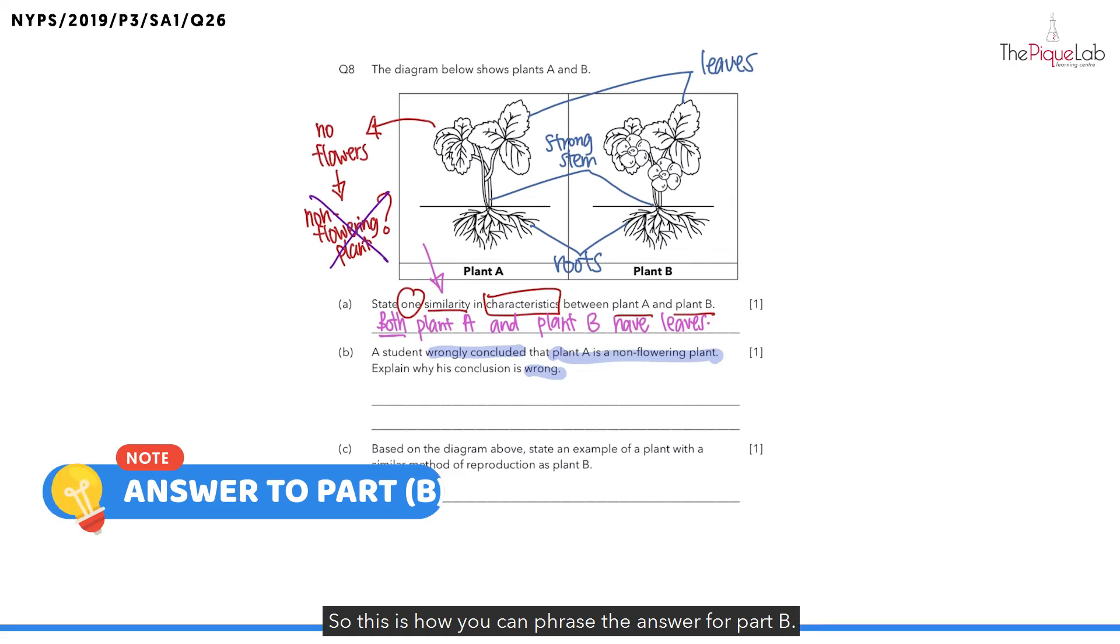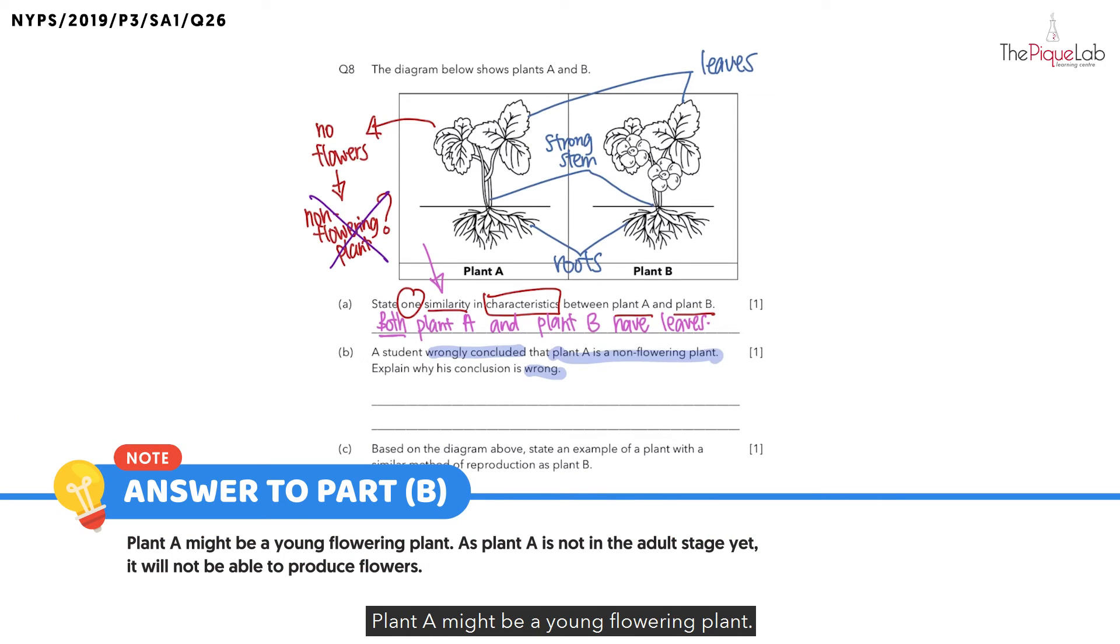So this is how you can phrase the answer for part B. Plant A might be a young flowering plant. As plant A is not in the adult stage yet, it will not be able to produce flowers.